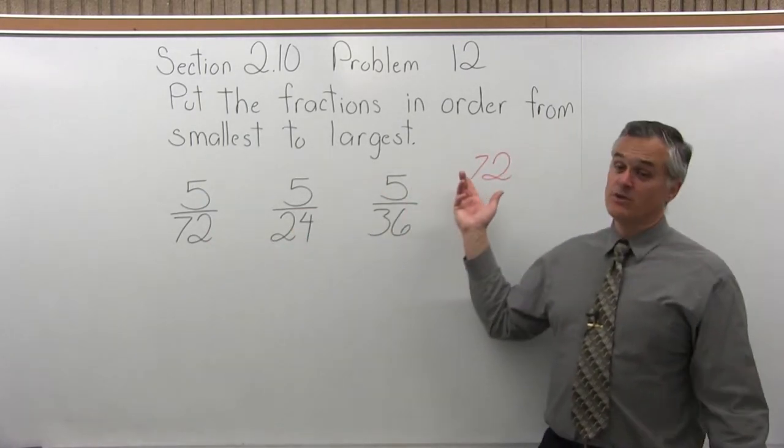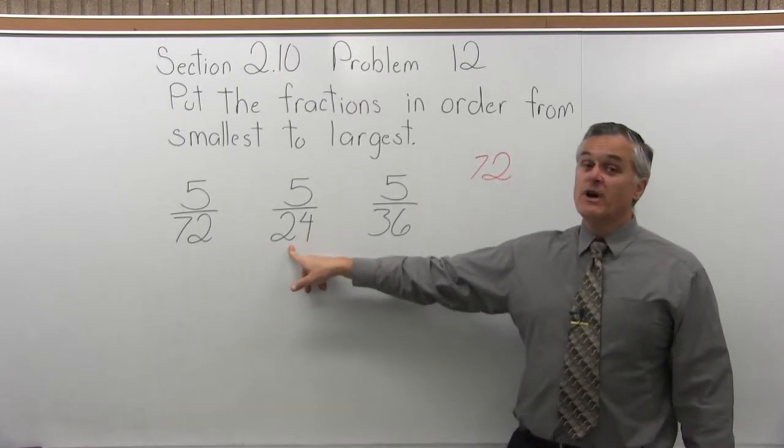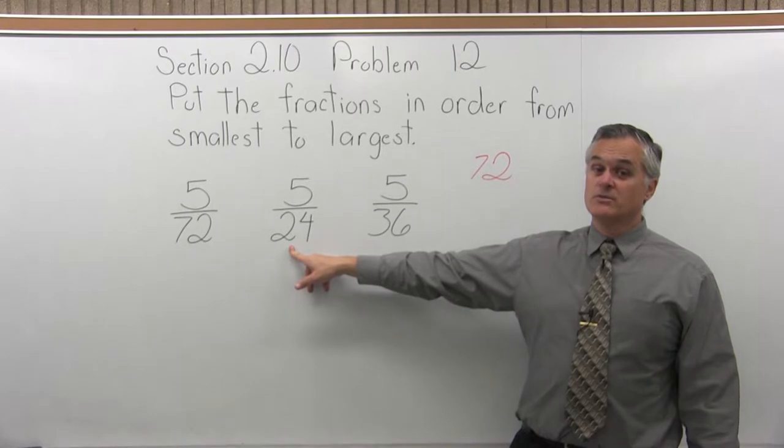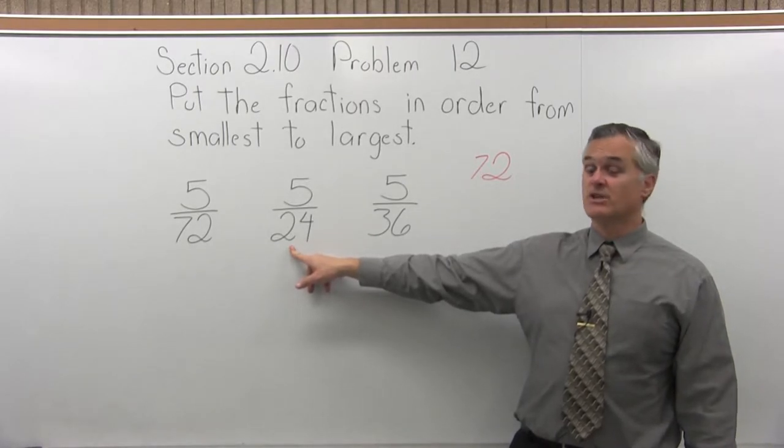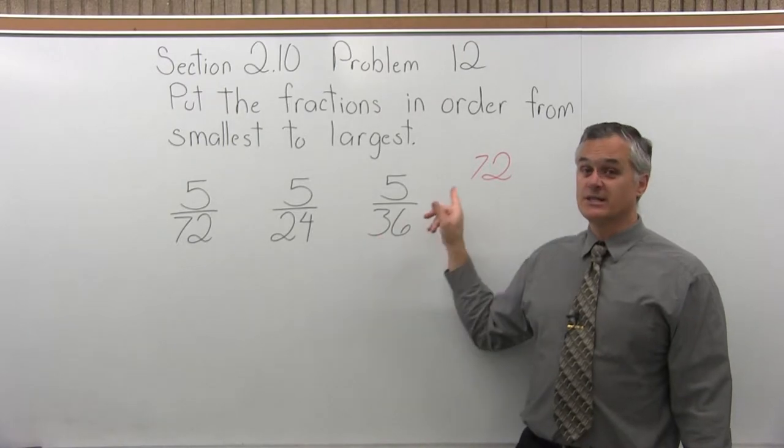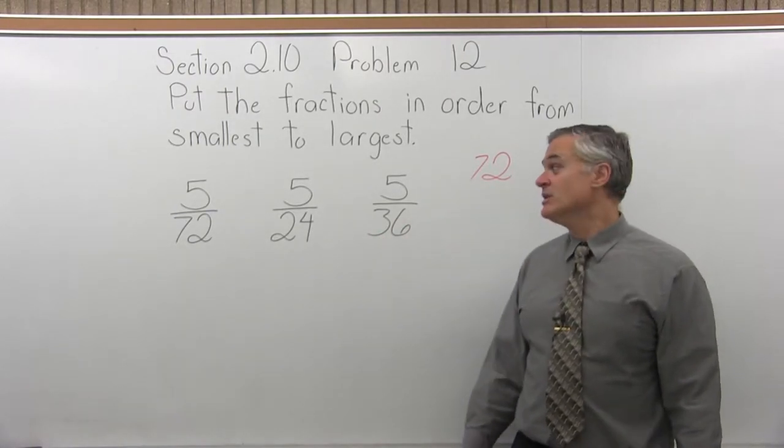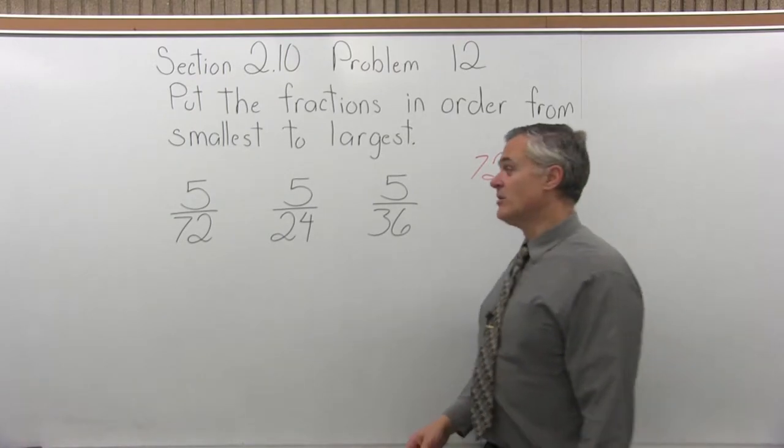72 clearly goes into 72 evenly, right? 72 times 1 is 72. 24 divides into 72 evenly also. 24 times 3 is 72. 36 also divides into 72 evenly. 36 times 2 is 72. So 72 is a good common denominator.